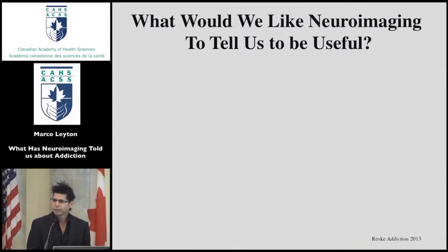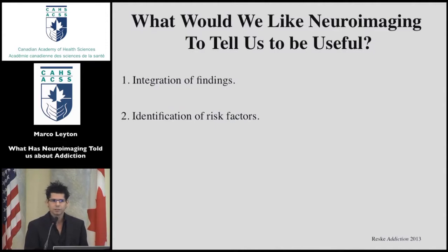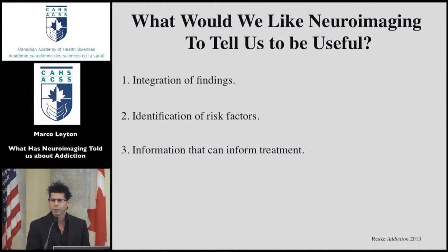With that caveat — and we have to take some care when interpreting these findings, with the added complication that there often seem to be many contradictions within the literature — what would we like neuroimaging to tell us when thinking about addictions? One thing we'd all like to see is cohesive integration of findings: which have been found repeatedly and are well-replicable. Imaging also has the potential to identify pre-existing risk factors and biomarkers for addictions, and to inform treatment decisions.